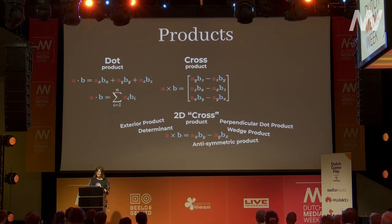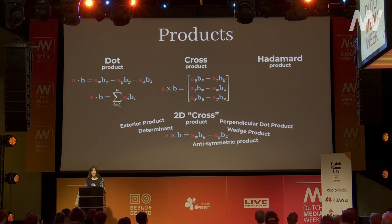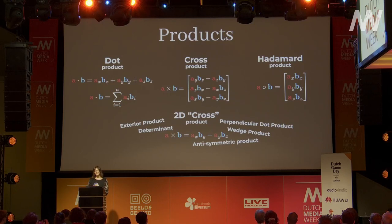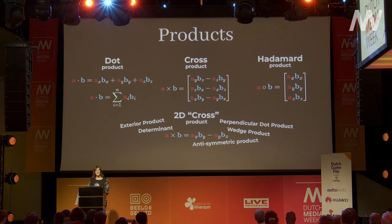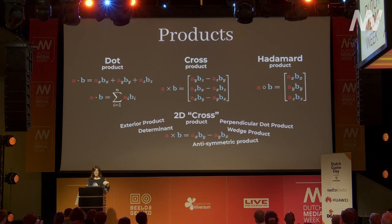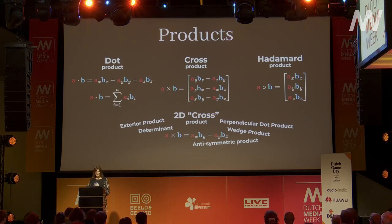Finally, we have the Hadamard product — the shader programmer product — where you just multiply the components. Just take every component, multiply them together, and that's your new vector. It's a component-wise product.